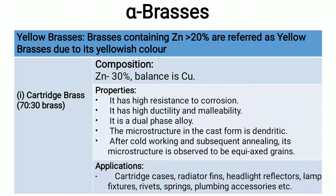Yellow brasses contain zinc greater than 20% and are referred to as yellow brasses because of their yellowish color. The first type is cartridge brass, also called 70-30 brass, with 30% zinc and balance copper. It has high resistance to corrosion, high ductility and malleability, and is a dual-phase alloy. After cold working and subsequent annealing, its microstructure shows equiaxed grains. Applications include cartridge cases, radiator fins, headlight reflectors, lamp fixtures, rivets, springs, and plumbing accessories.